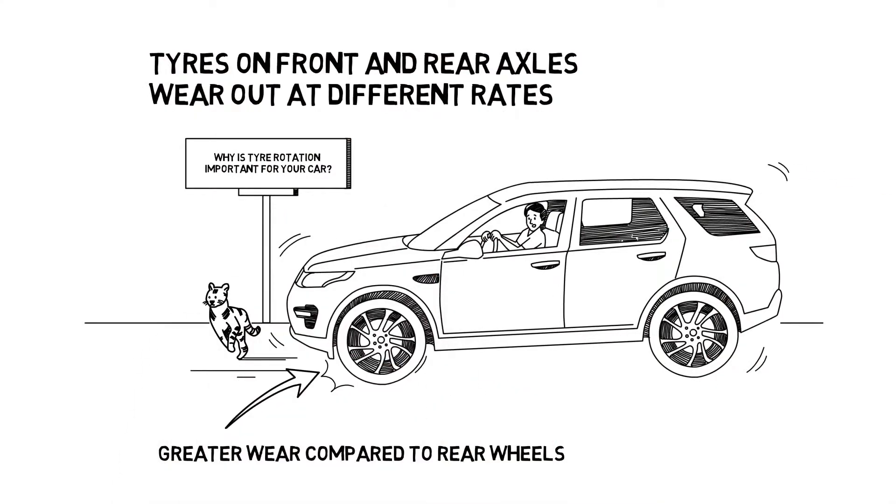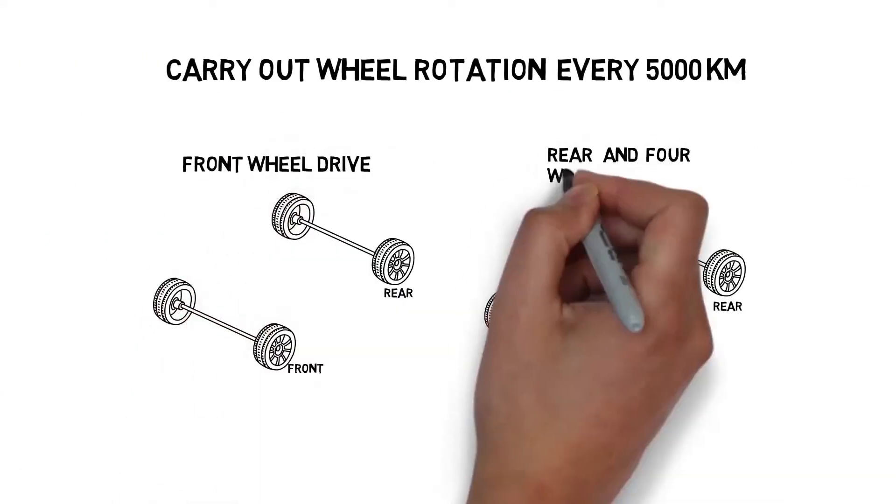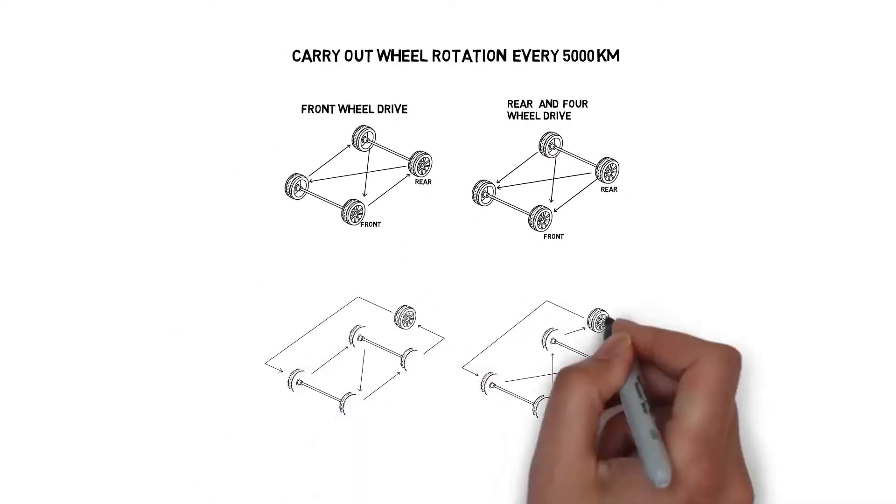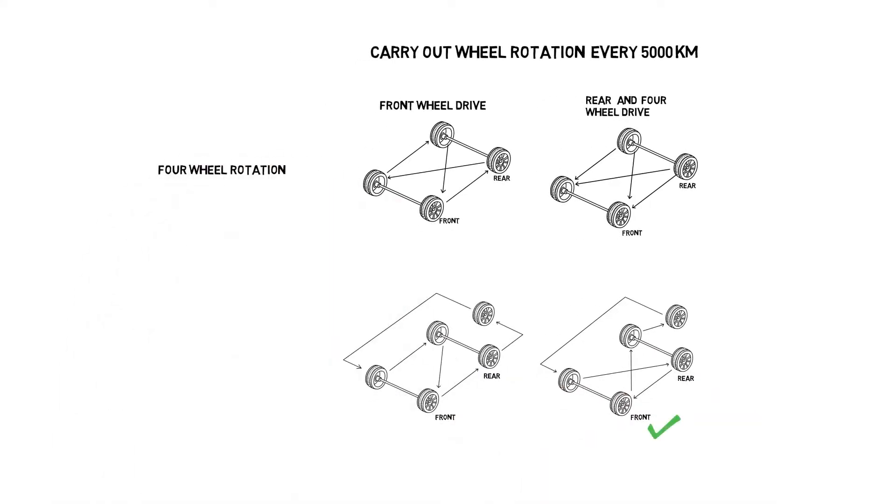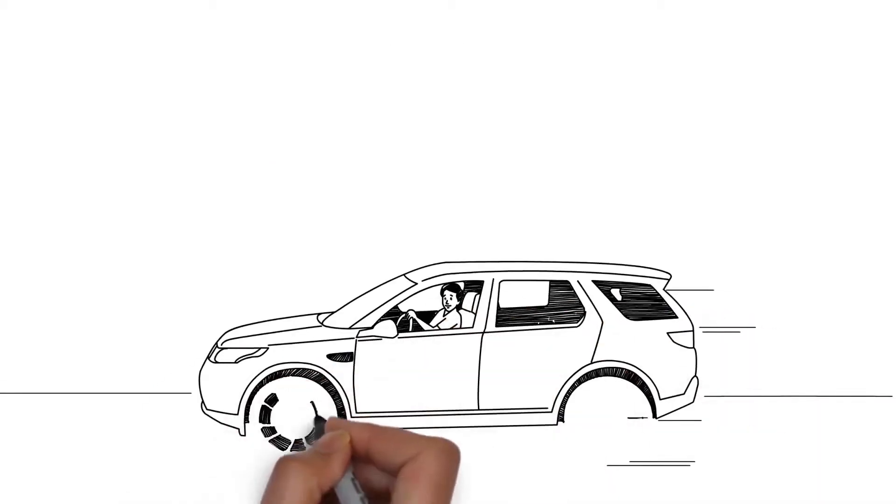Wheels on one axle can wear out faster than the others because of driving habits, braking and acceleration, or uneven weight distribution. So to even out wear, rotate wheels between axles every 5,000 kilometers. Among rotation types, we recommend the five wheel rotation. CEAT wishes you happy long rides.